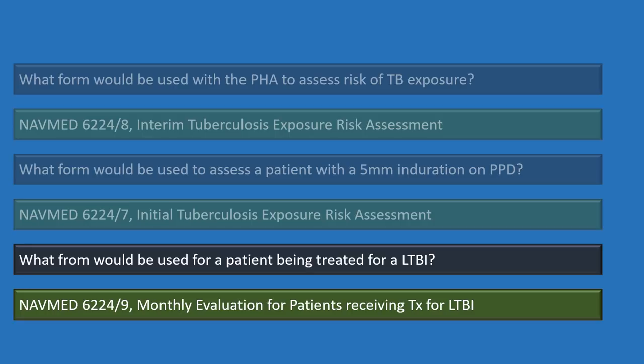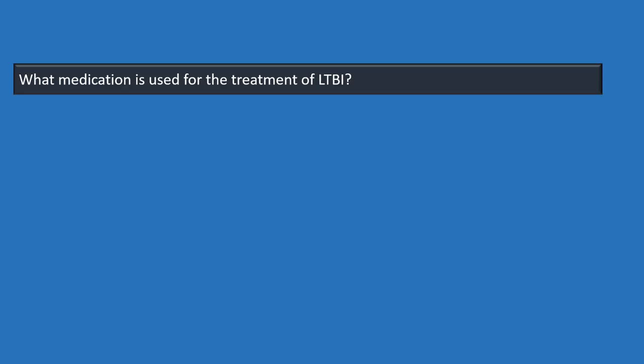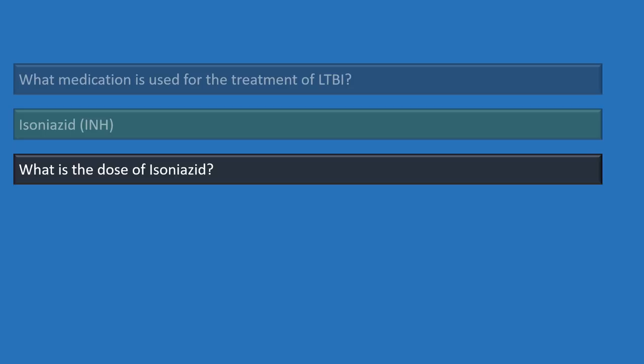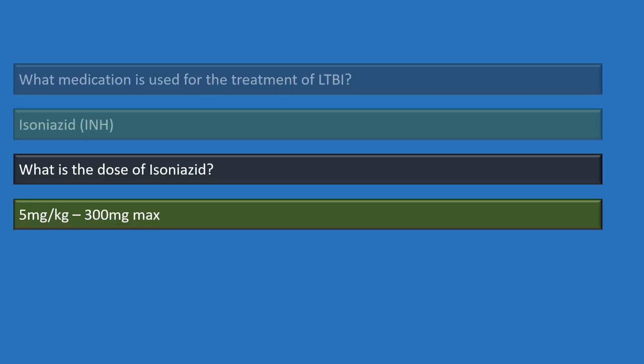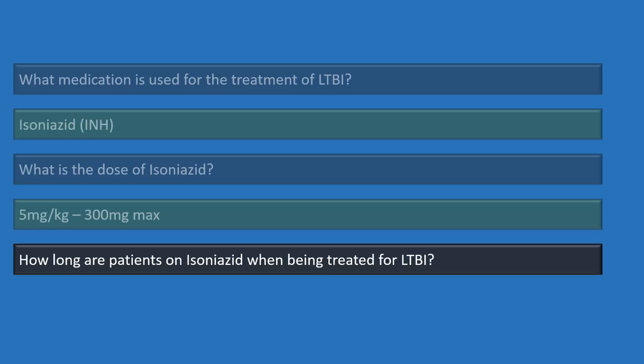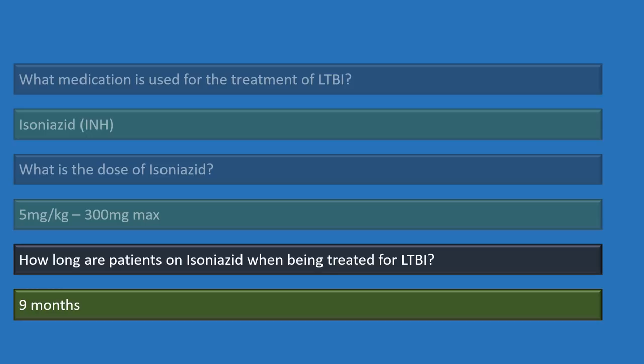The medication used for latent tuberculosis treatment is isoniazid (INH). The dose is five milligrams per kilogram with a 300 milligram maximum — we usually just do the 300 milligrams. Patients are on isoniazid for nine months.